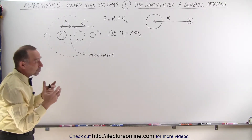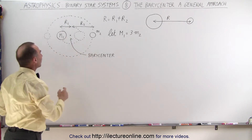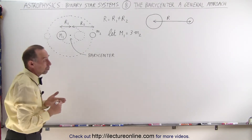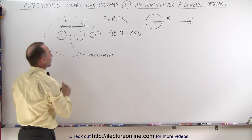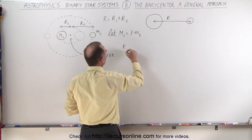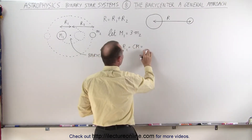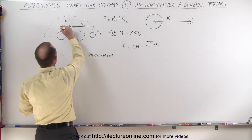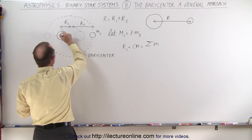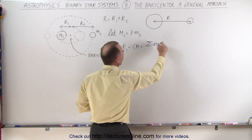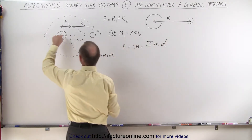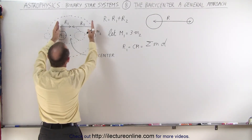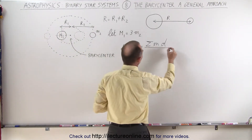Now what we're going to do is find some relationship between the masses and the distances from the barycenter to each of the two objects. First, we're going to find the center of mass, which is the distance to the barycenter from the large object. We take the origin and put it right at the center of the large object. For the first object, that distance will be zero, and for the second object it will be R1 plus R2.